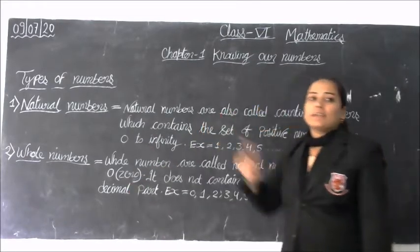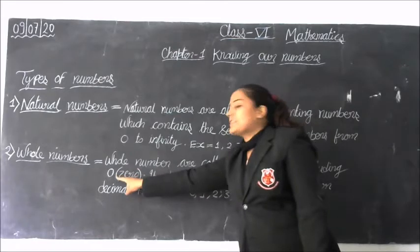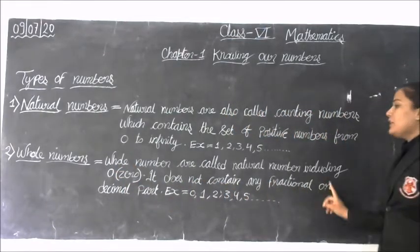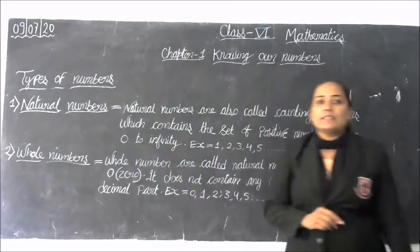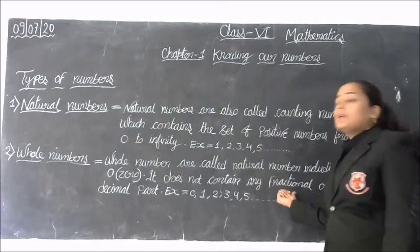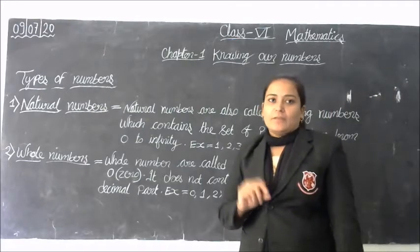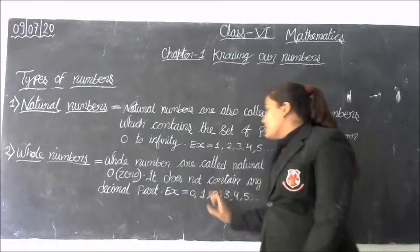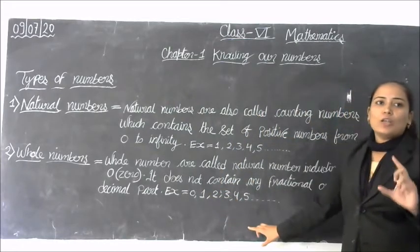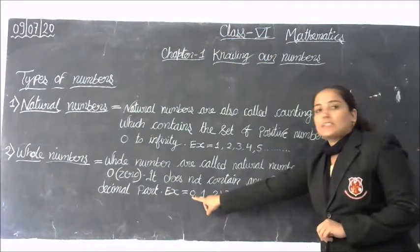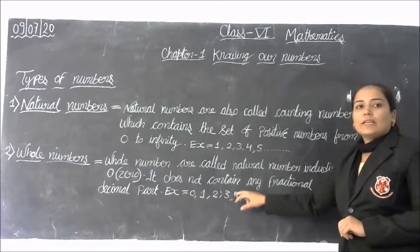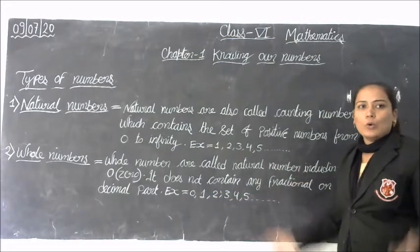In natural numbers there is no 0, but in whole numbers it starts from 0. Whole numbers do not contain any fractional or decimal part. Fraction means it has a numerator and denominator. Decimal means it has a decimal point — for example 2.3. So if we have a number like 2.3, it cannot be a whole number. Whole numbers start from 0 and go to infinity: 0, 1, 2, 3, 4, 5 are all whole numbers.